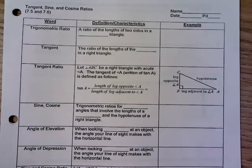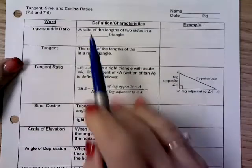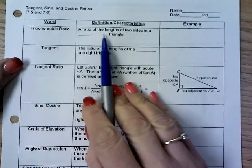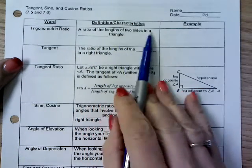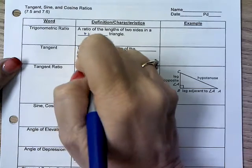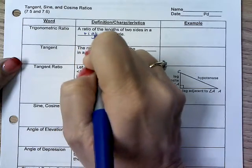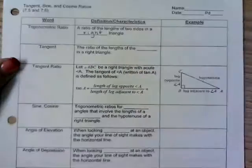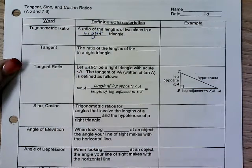Today we're going to talk about trigonometric ratios. Trigonometric ratios are just a ratio of the lengths of two sides in a right triangle. Remember, this whole unit is about the right triangle and the different properties that come with right triangles.